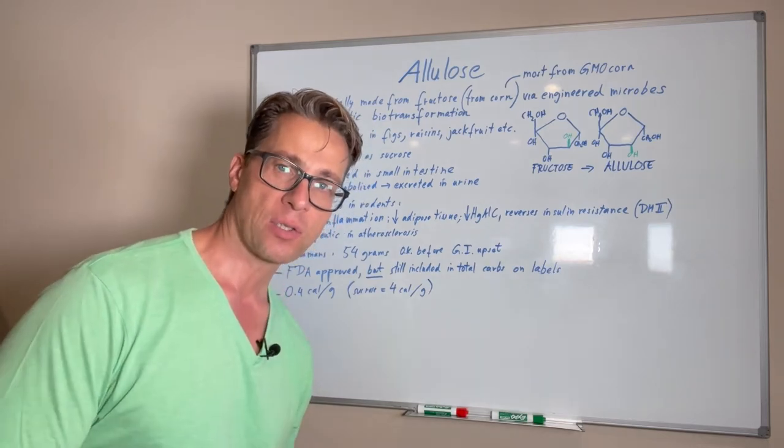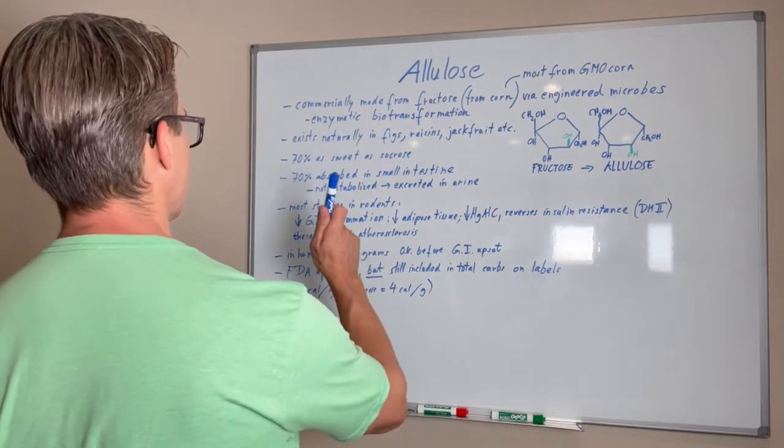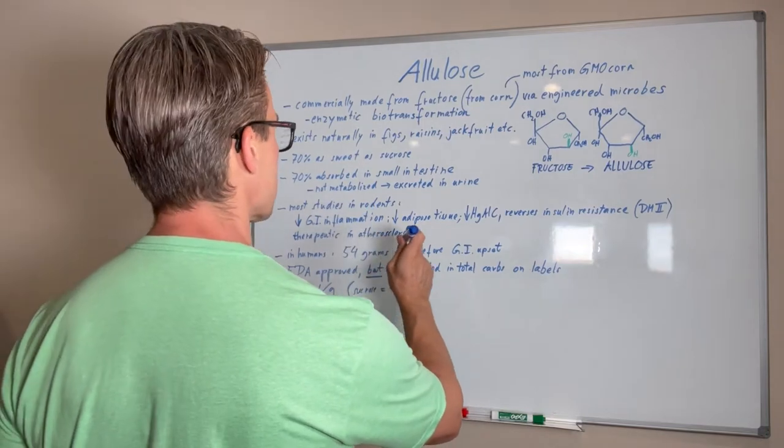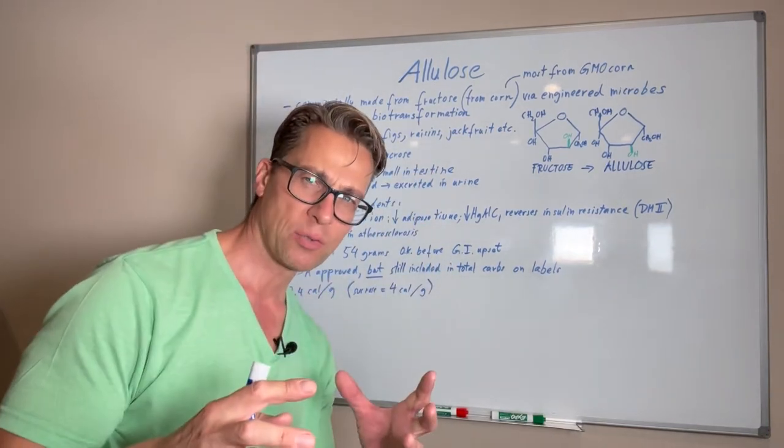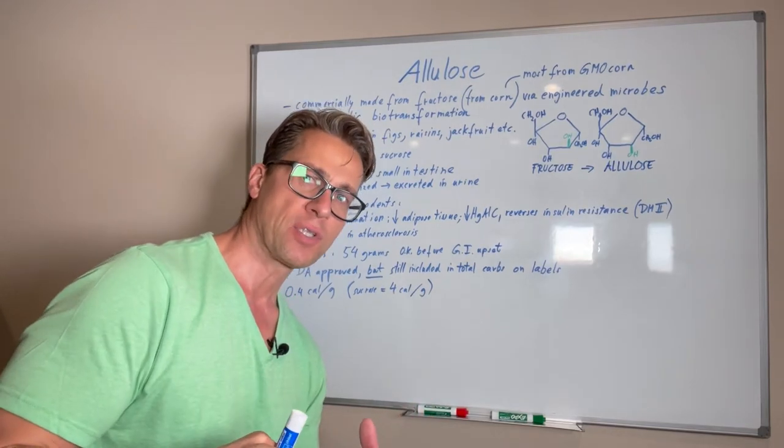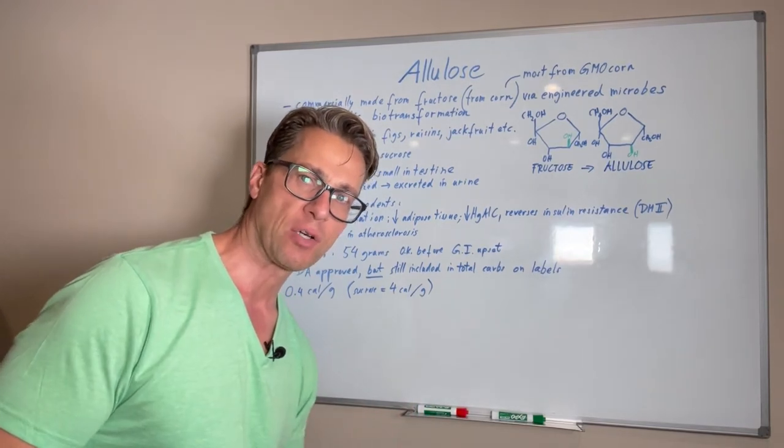In nature, Allulose does occur in very small amounts in things like raisins, jackfruit, and figs, but these are tiny amounts, so we don't really consume enough there that we could really have an idea of how it behaves in our body.